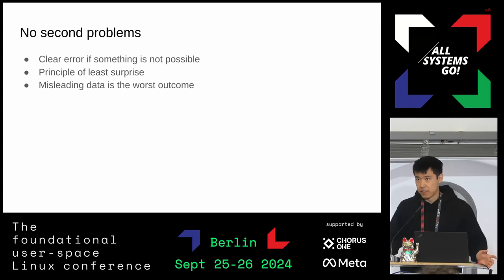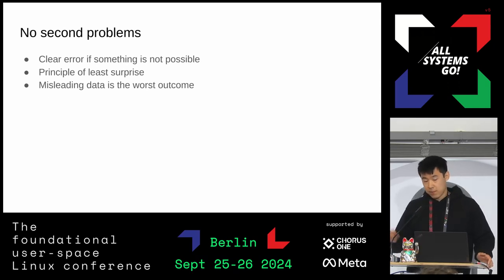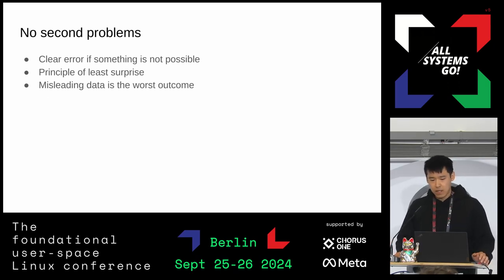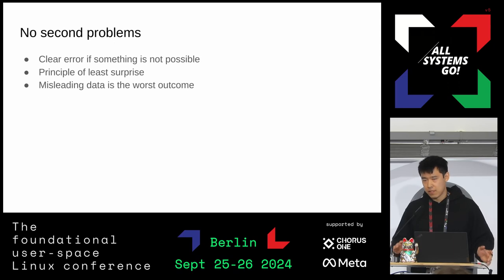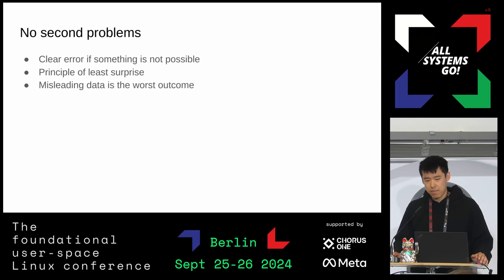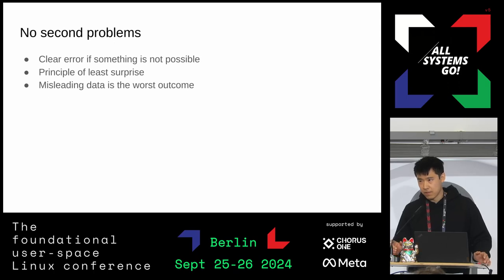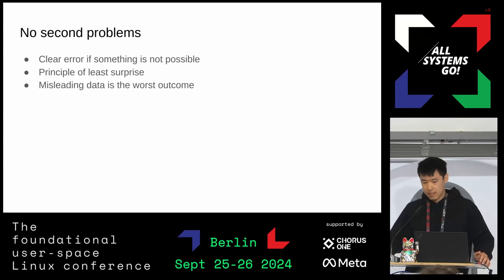What does 'no second problems' mean? I have some specific examples. The first one is a clear error if something's not possible. In the BPF world and kernel space, there are a lot of things you just can't do, and that's okay. But we should be really clear about what we can and cannot do. If you try to do something the verifier is going to reject, have a good error message pointing to where in the source. You don't want the user to get a verifier error and then try to map back bytecode to where in the script they're trying to do something — that would be a second problem.